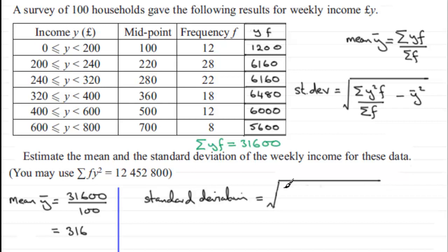We divide this by the total frequency F, which is 100, and then we subtract the mean Y bar all squared, which is 316 squared. Work this out and what you end up with is 157 pounds point 073 and so on. And if we round this to the nearest pound, it's going to be 157 pounds.